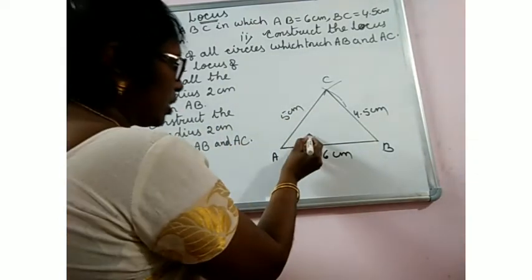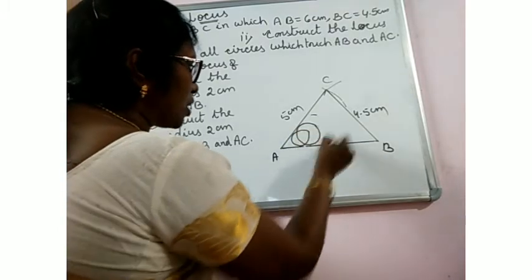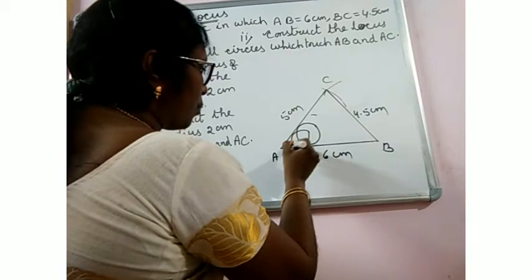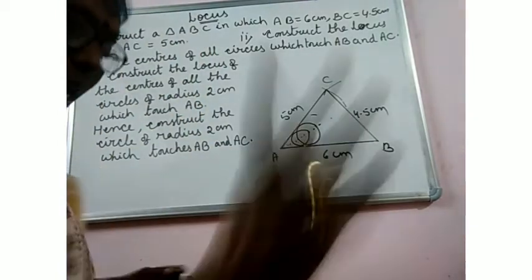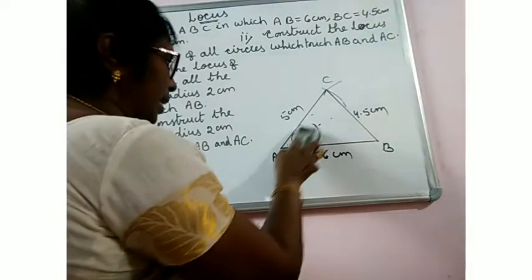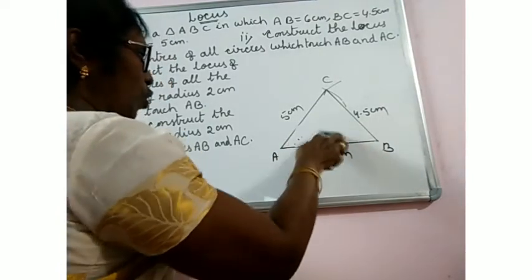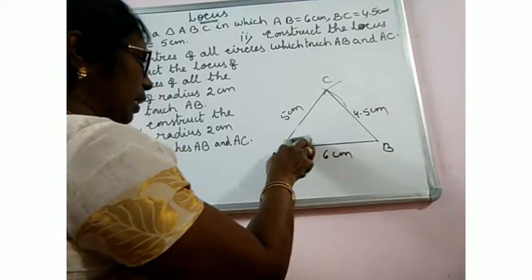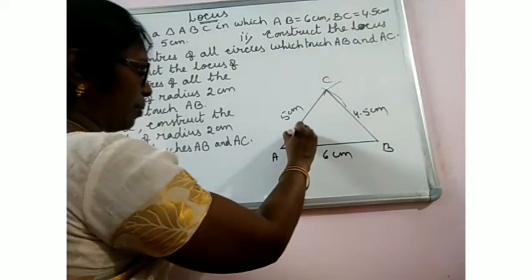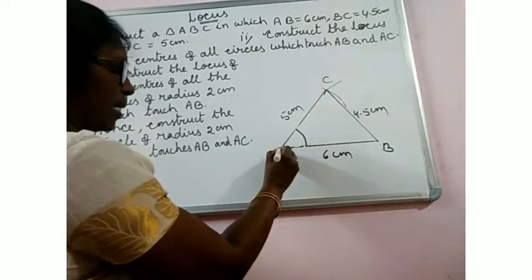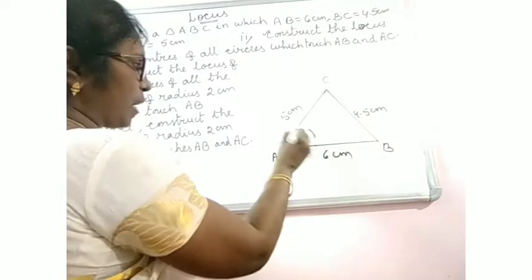The locus of the centers of all circles which touch AB and AC — the angle included by these two sides is angle CAB. The bisector of angle BAC is the locus of the centers of all circles which touch AB and AC. Suppose a circle is like this — when we join all the centers it will be the bisector of this angle. We should not draw the circles themselves.